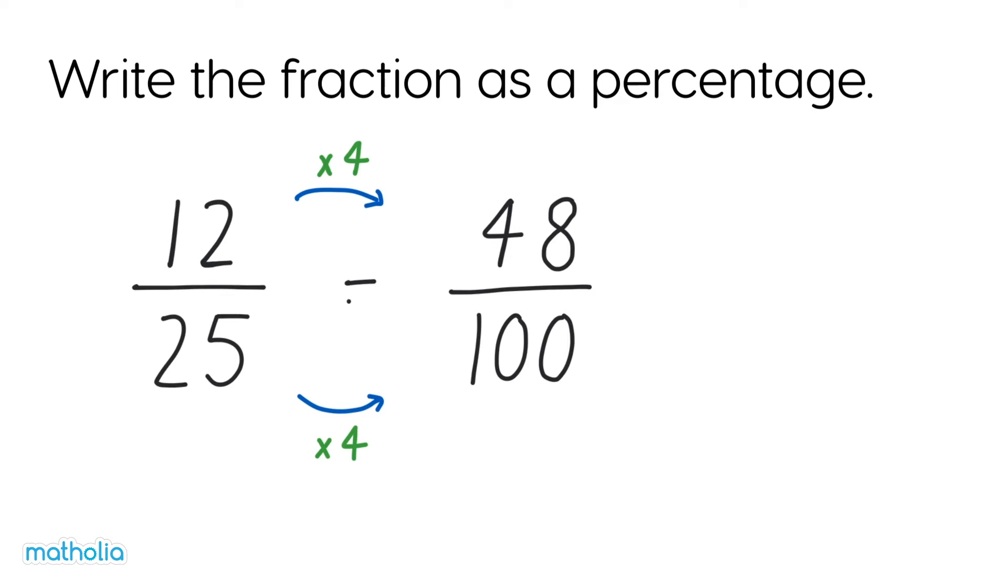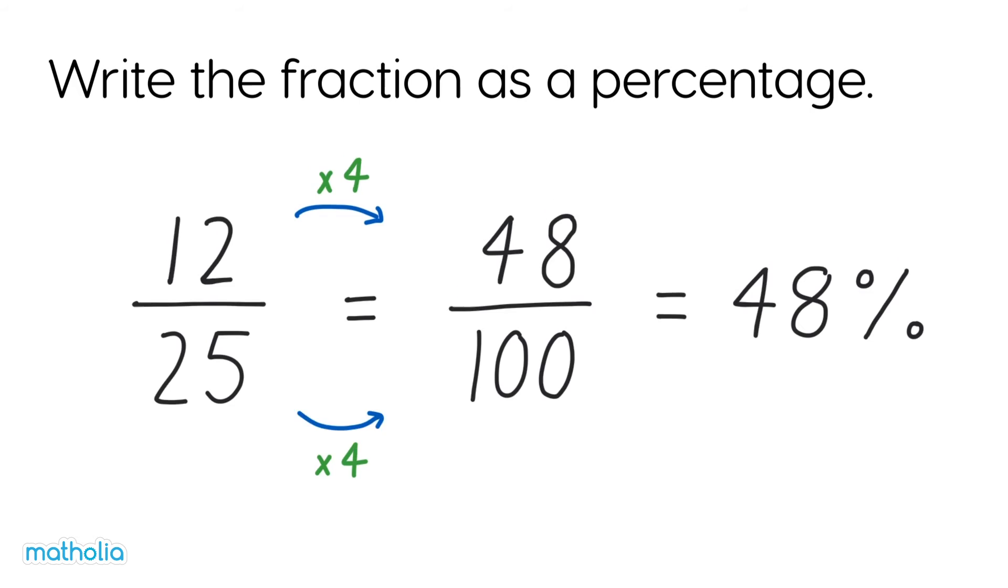12 twenty-fifths equals 48 one hundredths. 48 one hundredths equals 48%. So 12 twenty-fifths also equals 48%.